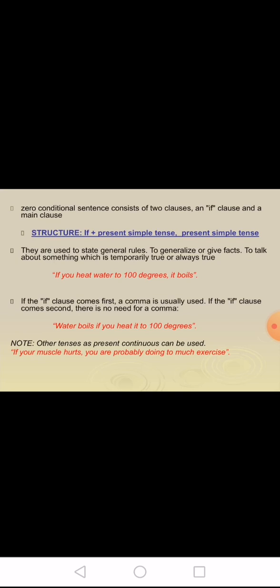For example: if you heat water to 100 degrees, it boils. If the if clause comes first, a comma is usually used, but if the if clause comes second, there is no need for a comma. For example: water boils if you heat it to 100 degrees. Note: we can also use the present continuous tense — for example, if your muscle hurts, you are probably doing too much exercise.